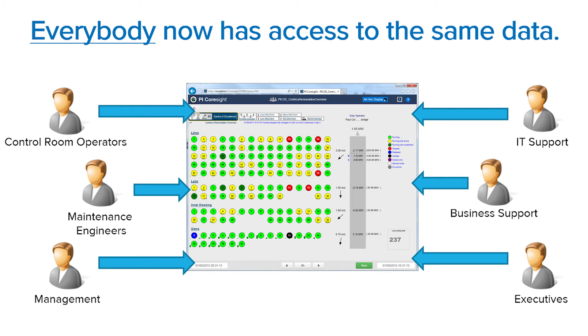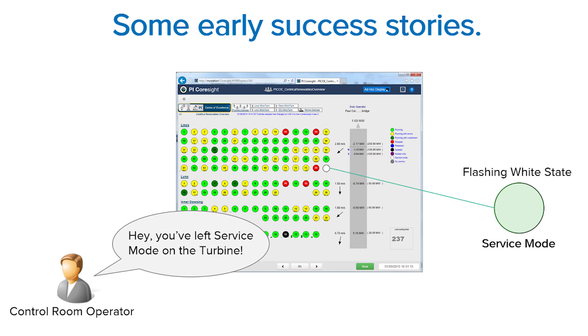When the operator went through that process and logged the return of the turbine back to him, rather than returning to a green PI — all running, everything's fine — it wasn't. It was flashing white, indicating a combination of statuses: basically saying it was left in local control and was not generating. That wouldn't have been immediately obvious, and it could potentially have been some time before the operator noticed, by which time the crew would be back on the vessel travelling home and you've lost the night's generation on that turbine.